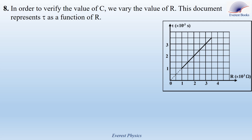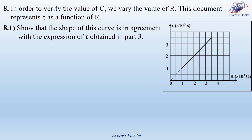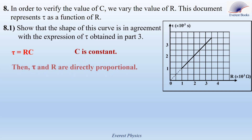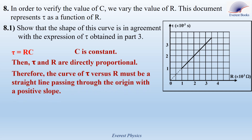Part 8: in order to verify the value of C, we vary the value of R. This document represents T1 as a function of R. Part 8-1: show that the shape of this curve is in agreement with the expression of T1 obtained in part 3. The curve is a straight line passing through the origin with a positive slope. Since T1 equals R times C and C is constant, T1 and R are directly proportional, so the curve of T1 versus R must be a straight line passing through the origin with a positive slope, which is in agreement with the shape of this curve.